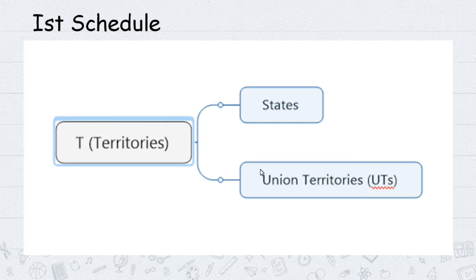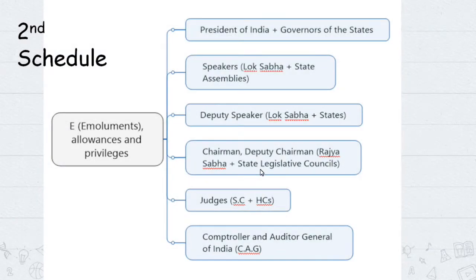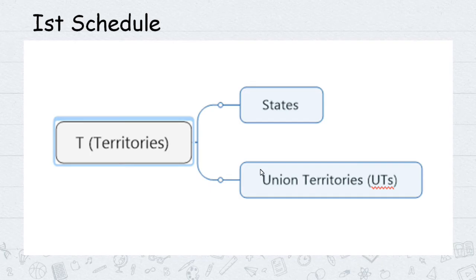The First Schedule lists the States and Union Territories. Under it, States have a governor, while Union Territories with less than full statehood have an administrator. This schedule covers all territorial divisions of India.